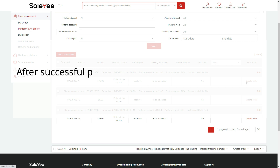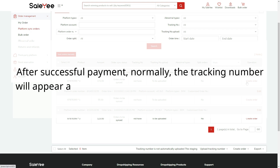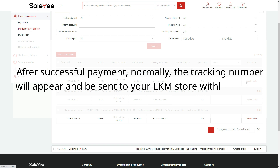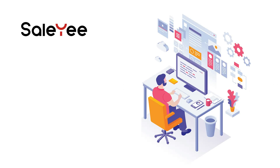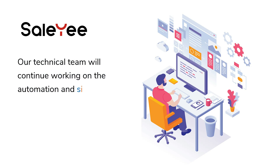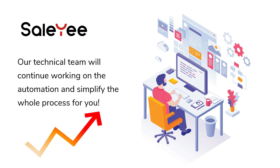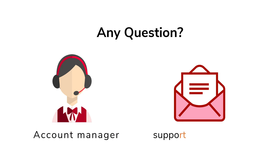After successful payment, normally the tracking number will appear and be sent to your EKM store within 48 hours. Our technical team will continue working on automation and simplifying the whole process for you. Thanks for watching — if you have any questions, please feel free to contact us.